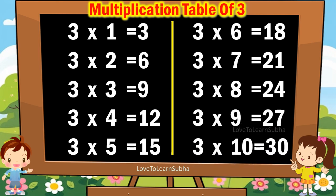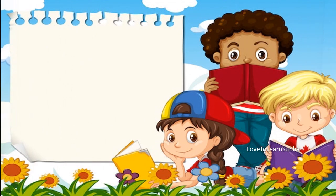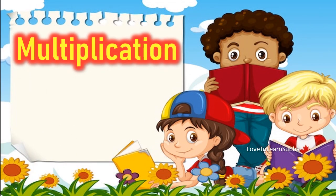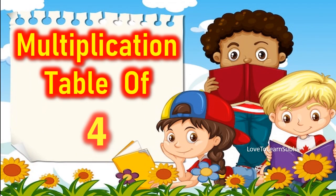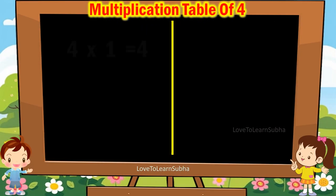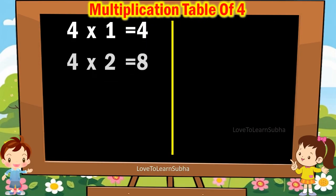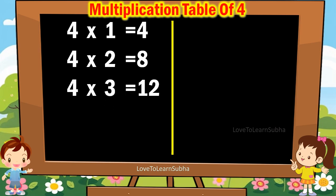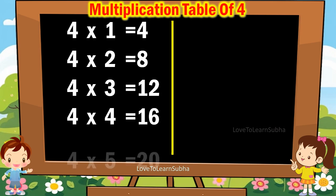3 10s are 30. Multiplication table of 4. 4 ones are 4, 4 twos are 8, 4 threes are 12, 4 4s are 16, 4 5s are 20.